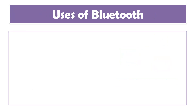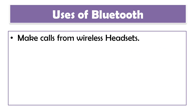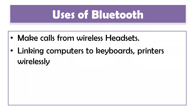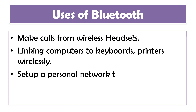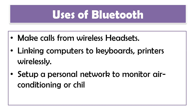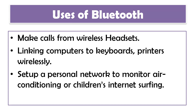Next, we have the uses of Bluetooth. Bluetooth can be used to make calls from a wireless headset, or for linking computers to keyboards and printers wirelessly. Also, you can set up a personal network to monitor the air conditioning or children's internet surfing. You can control the AC with the help of Bluetooth, because there are Android apps developed for this which use Bluetooth to help monitor electrical devices in your home.